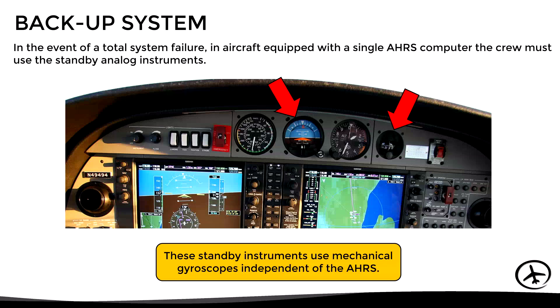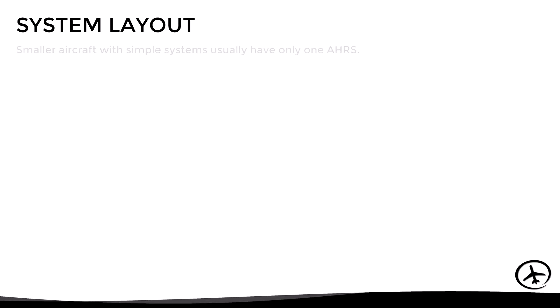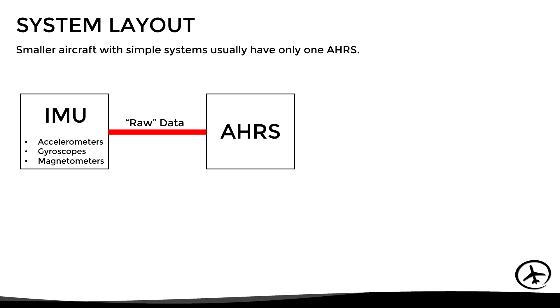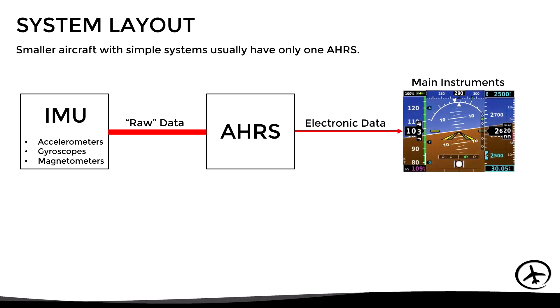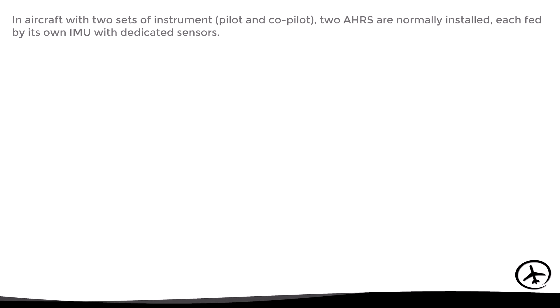Regarding system layout, smaller aircraft with simple systems usually have only one AHRS computer. In this case, the IMU sensors send raw data to the Kalman filter and processor of the AHRS, and then the unit sends the processed electronic data to the relevant instruments. Separately, the standby instruments are driven by mechanical gyroscopes.